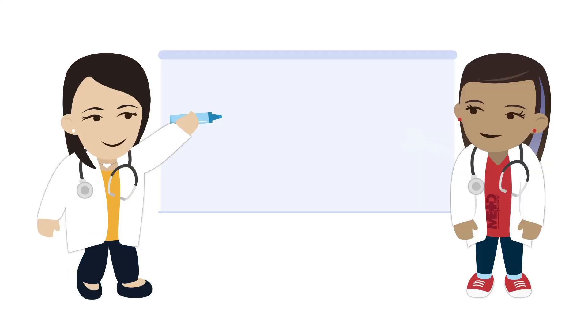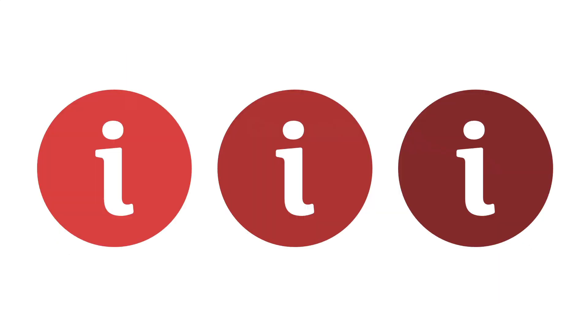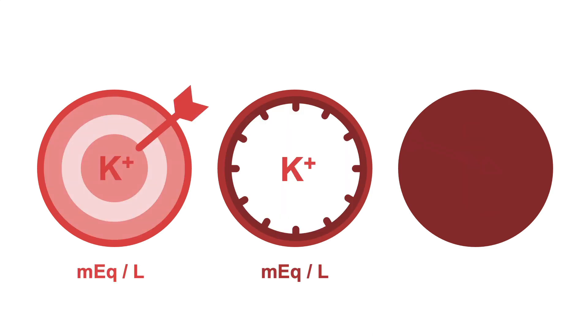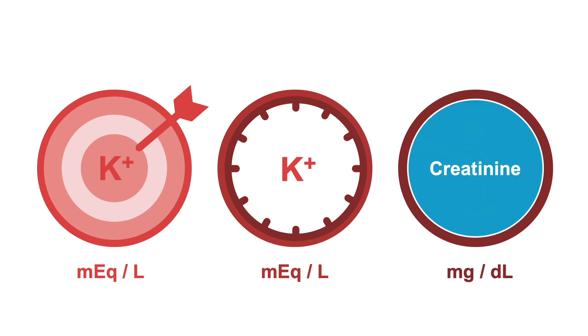Let's now discuss a simple calculation to help you decide how much potassium to give. We need three pieces of information. One, the patient's goal potassium. Two, the patient's actual potassium level. And three, the patient's creatinine.